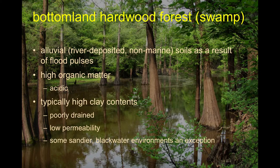Bottomland hardwood forests are another wetland type — alluvial systems associated with moving water, river-deposited sediments, and seasonally flooded areas. During spring floods the area gets very wet into summer, then starts to dry out. These soils tend to be high in organic matter, really acidic, and usually have a lot of fines and clays. Here we're looking at a cypress swamp as an example.